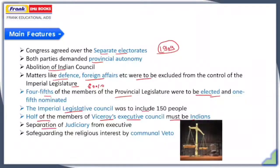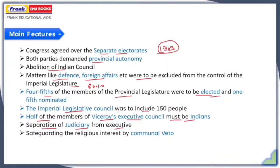They also demanded the separation of the judiciary from the executive, because they believed that only after being free from executive control could the judiciary work impartially. They also demanded a communal veto in the provincial legislature in order to secure communal and religious interests. That covers all the features of the Lucknow Pact.